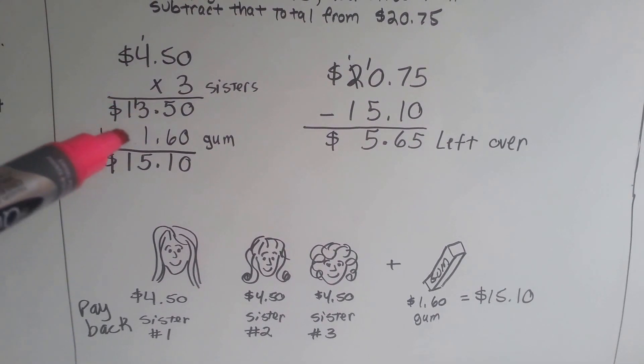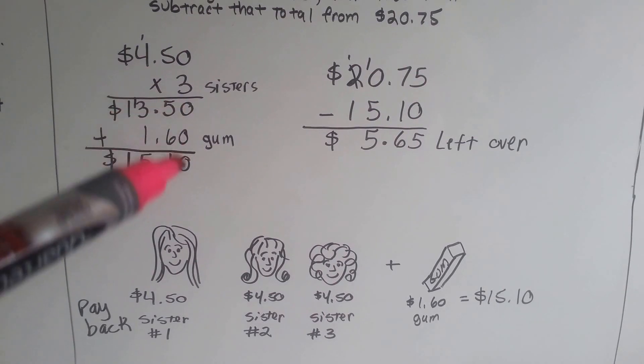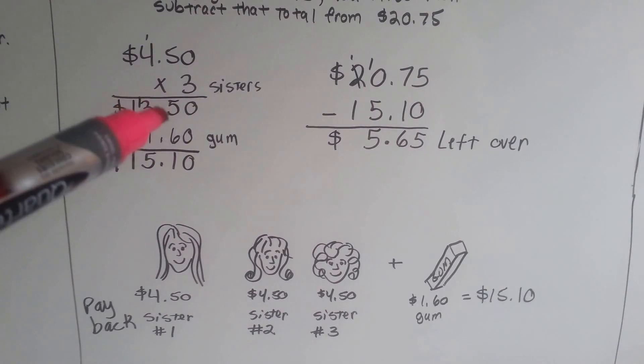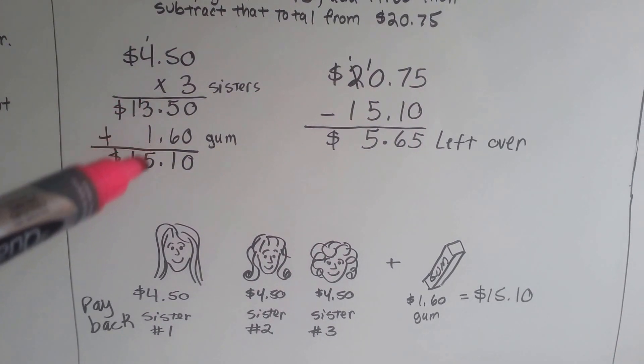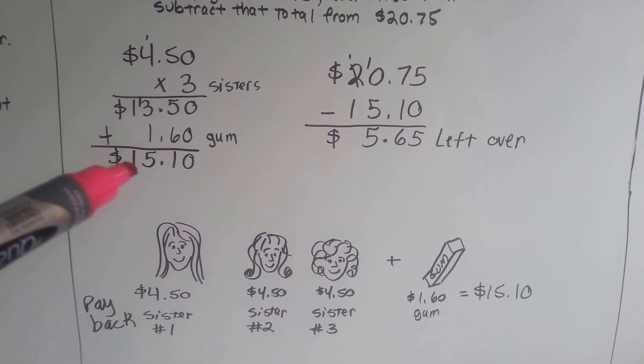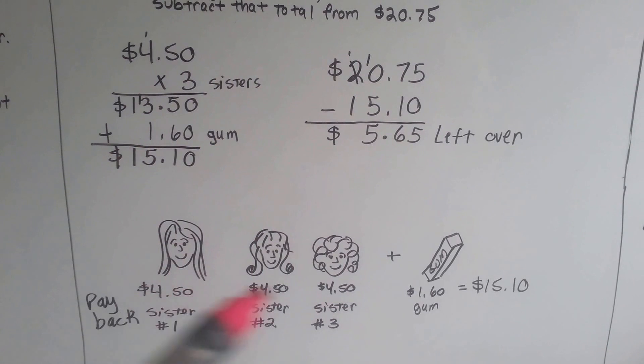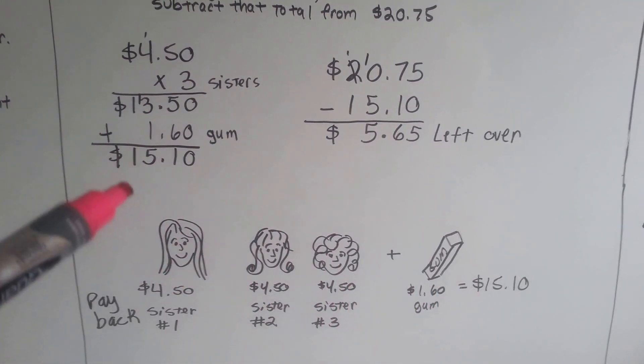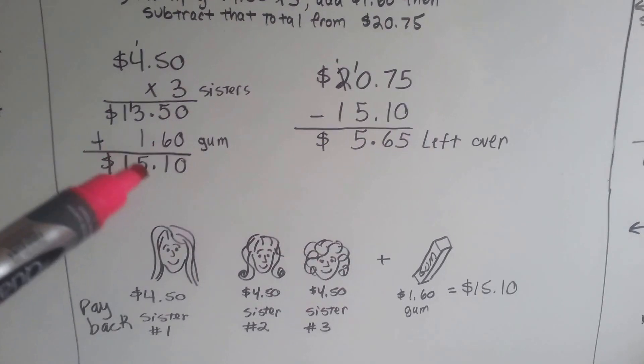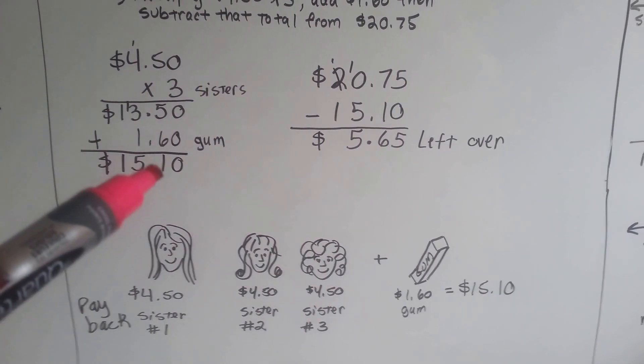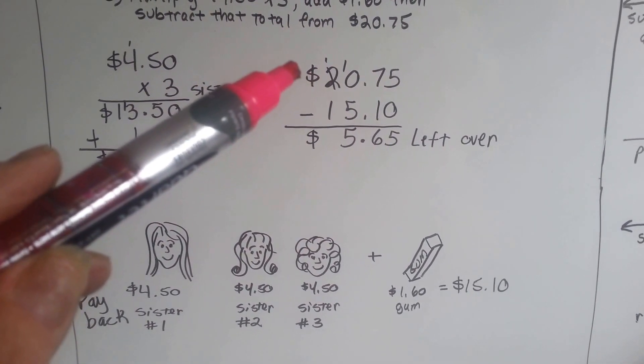Now we have to add the gum. It's $1.60. Zero and zero is zero. Six and five is eleven. We carry the one and put the one down. One and three and one is five. And we drop the one down. So the total between paying her sisters back and buying the gum is $15.10.